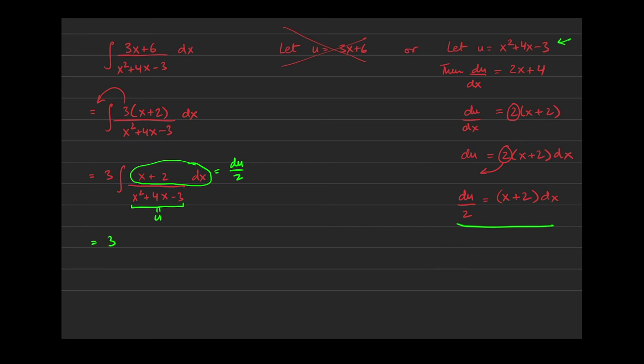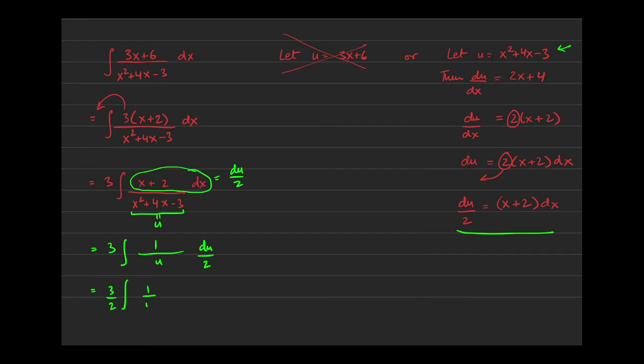So this really becomes, in u-land, the integral of du over 2, which I'm going to write off to the side. The numerator is just 1. And then the u is in the denominator, so I have that. The 2 that's in the denominator, I can pull out and get 3 over 2. Integral of 1 over u du. And here, hopefully, you remember that the integral of 1 over u is ln of the absolute value of u plus c. And now u can be replaced back with ln of the absolute value of x squared plus 4x minus 3 plus c.